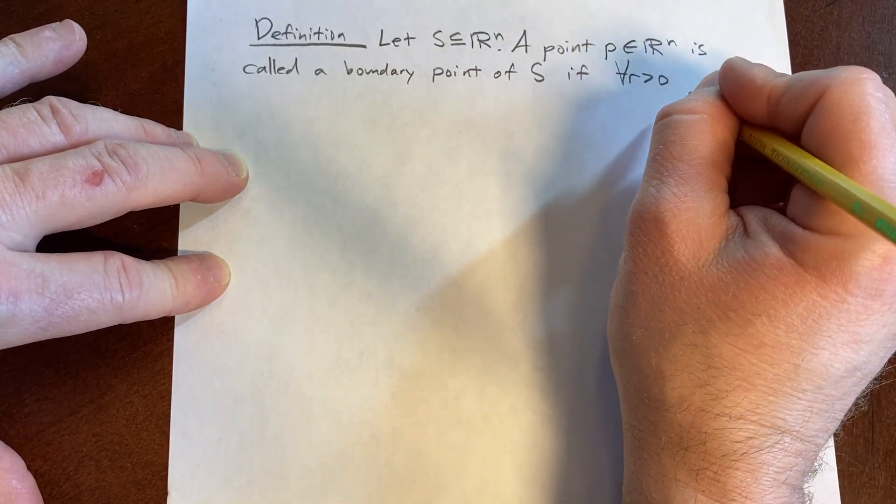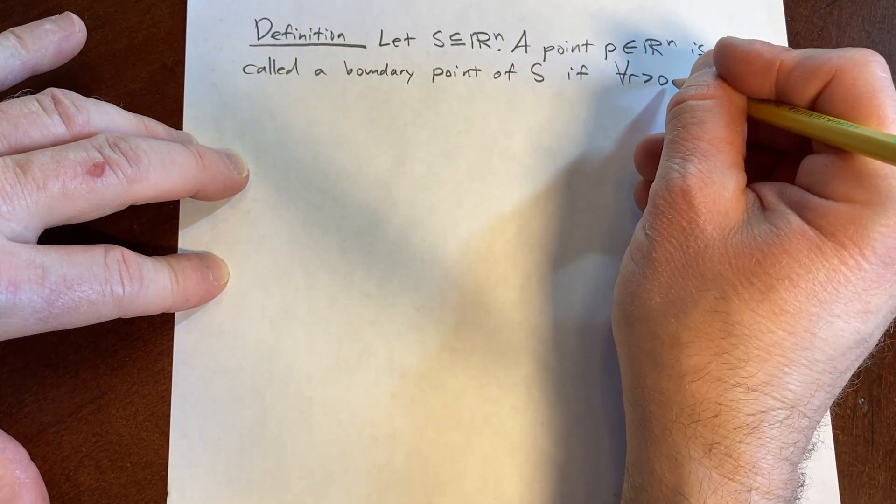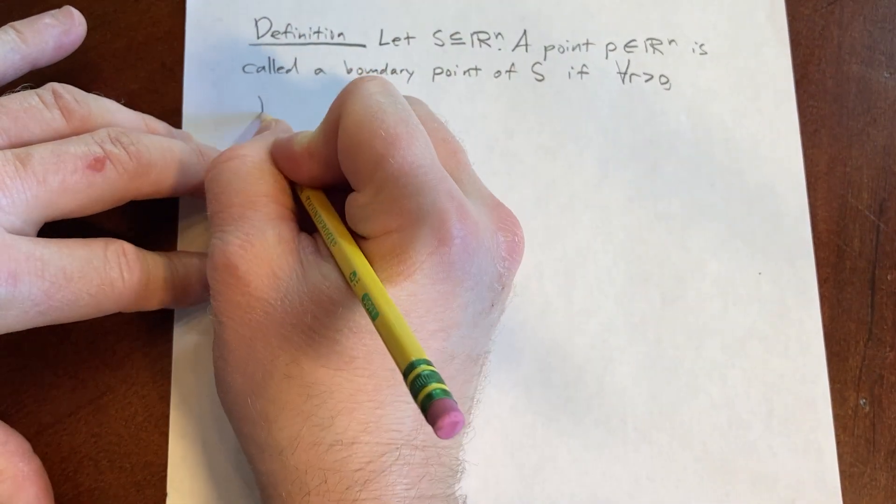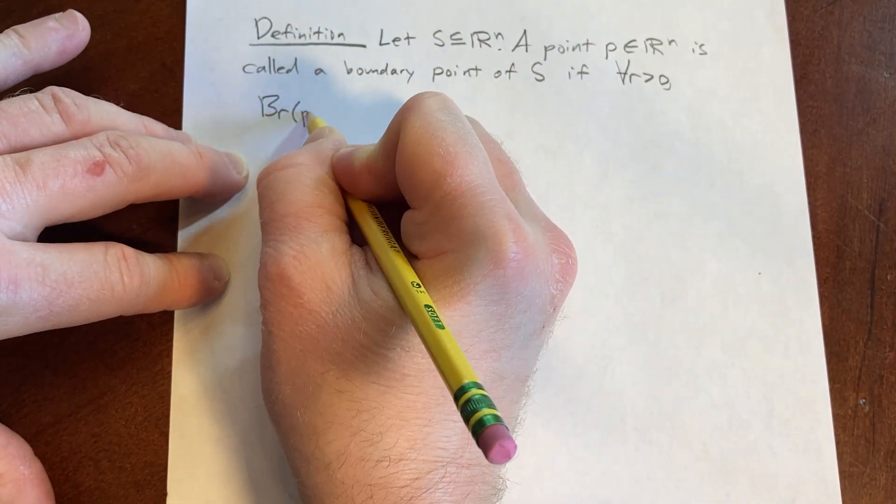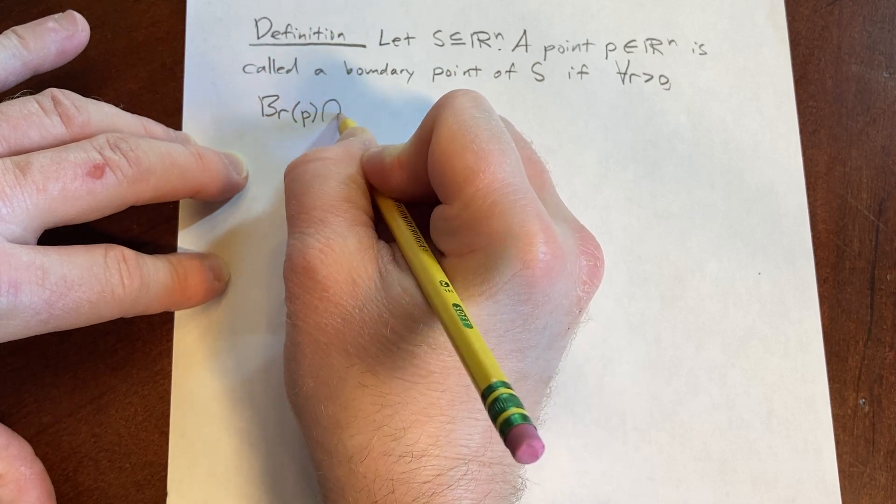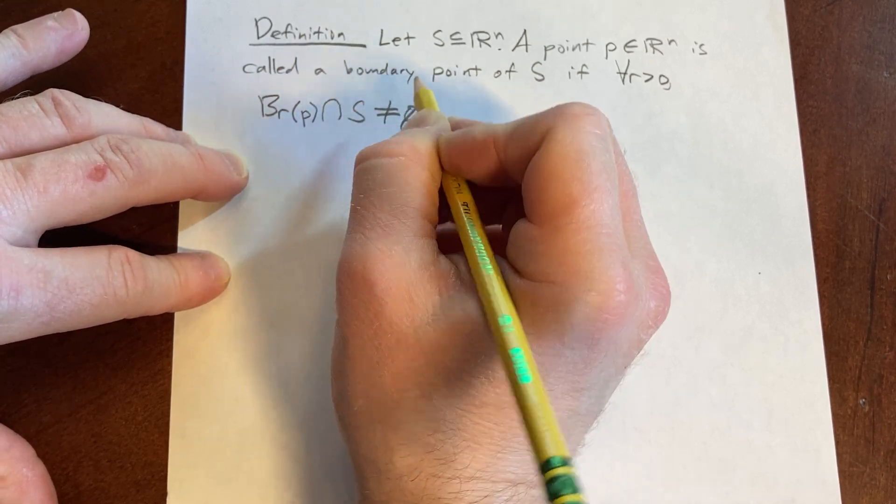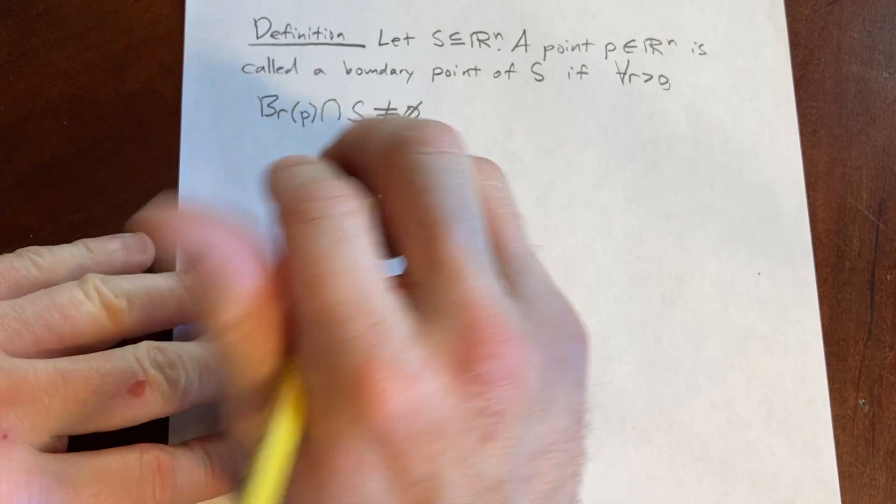so for every positive number R, no matter how small, if you look at the intersection between the ball of radius R centered at that point P with S, it's not empty, it contains at least one element.